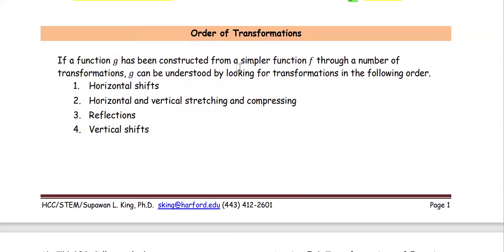The order of transformations. If the function g has been constructed from a simpler function f through a number of transformations, g can be understood by looking for transformations in the following order.